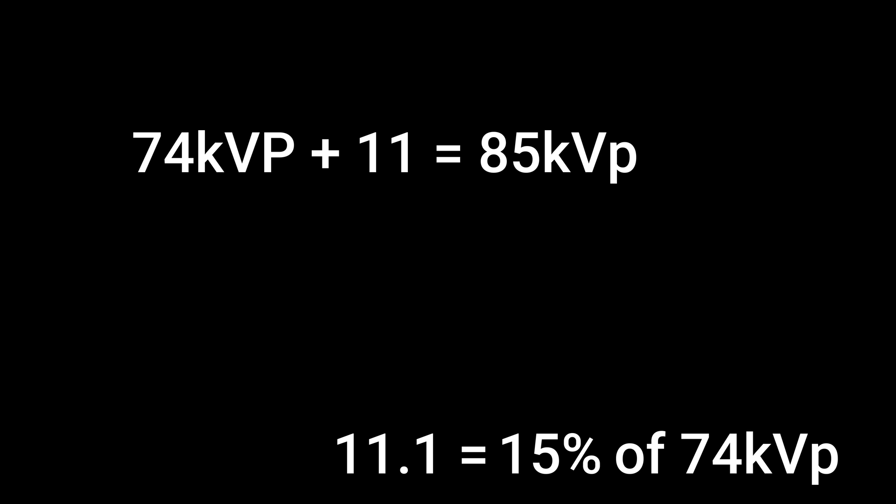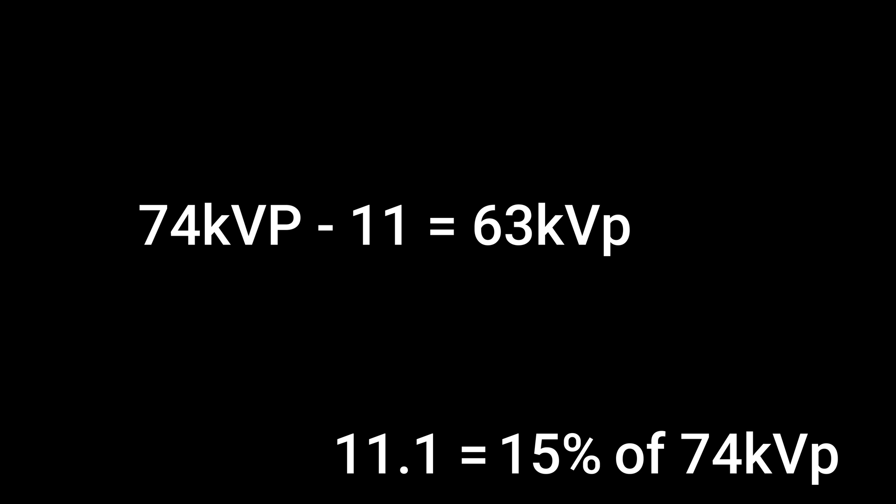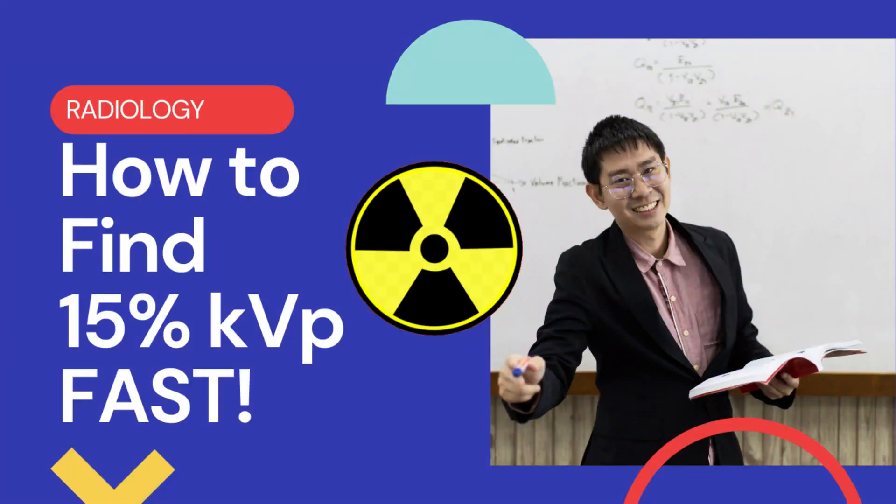If you increase 74 kVp by 15%, you add 11 and you have 85 kVp. If you have 74 kVp and you want to lower by 15%, you subtract 11 and you have 63 kVp. So hopefully this will be easy for you: find your 10%, half that to find your 5%, add those two together — that is your 15%. You can do this within 3 to 5 seconds.